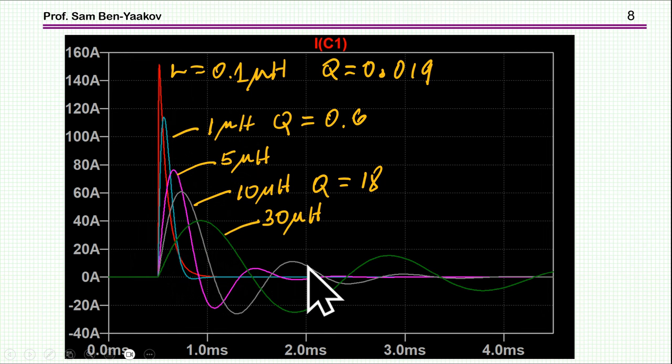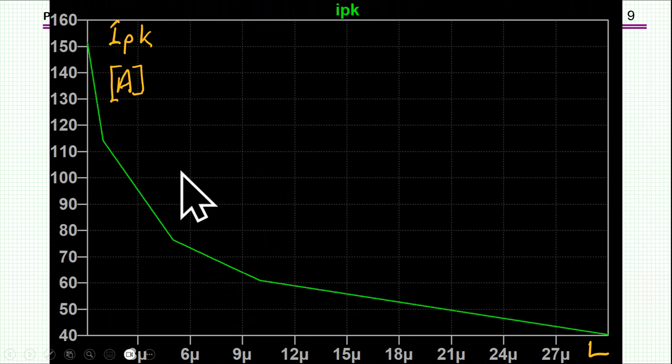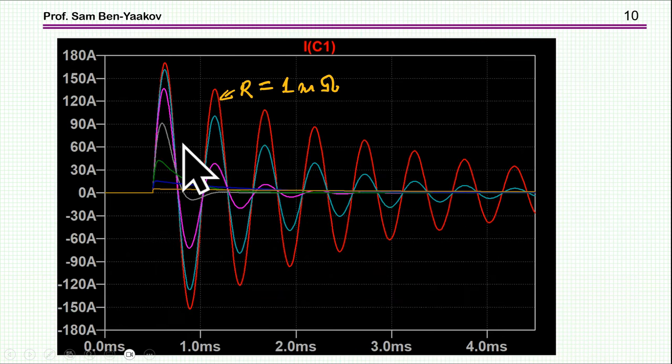Then as the inductance goes up, we start to see the oscillation. The peak goes down, and the period goes up. The frequency goes down because, of course, L is increasing—the inductance is increasing and the resonant frequency is being reduced. Here is a summary of all this in terms of the peak as a function of the inductance. We see here very small inductance gives very high current, then it goes down.